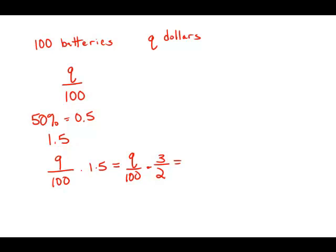And when I multiply fractions, you just multiply right across: 3Q over 200. This is the price of the batteries after the 50% increase, and this is answer choice A.